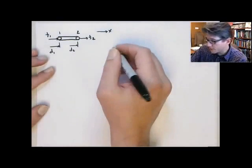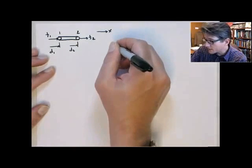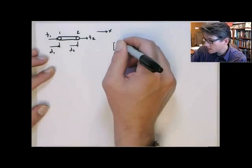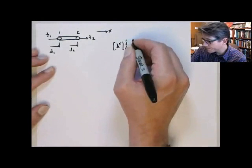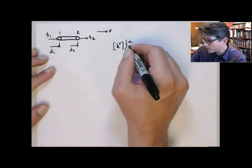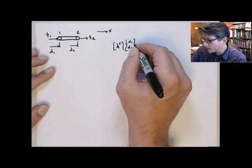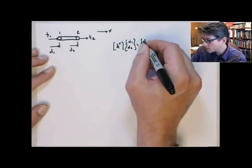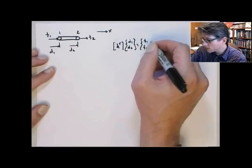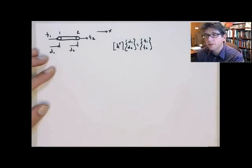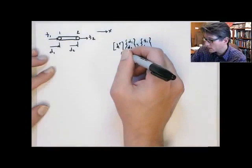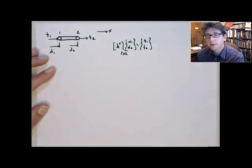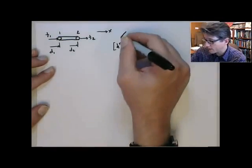We want to find the stiffness matrix, which we'll call ke, that's going to relate the nodal displacements d1 and d2 to the externally applied forces f1 and f2. This is going to be a 2 by 2 matrix. This is what we want to derive.